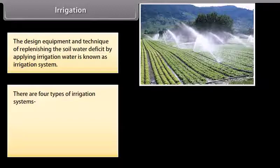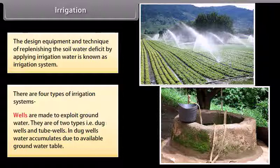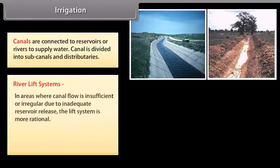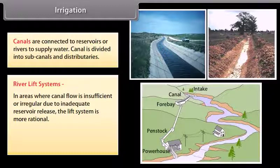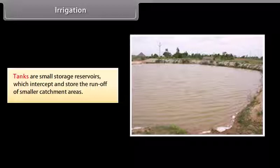There are four types of irrigation systems. Wells exploit ground water and are of two types: dug wells and tube wells. Canals are connected to reservoirs or rivers and divided into sub-canals and distributaries. In river lift systems, water is directly drawn from rivers for supplementing irrigation in areas close to rivers where canal flow is insufficient or irregular. Tanks are small storage reservoirs which intercept and store the runoff of smaller catchment areas.